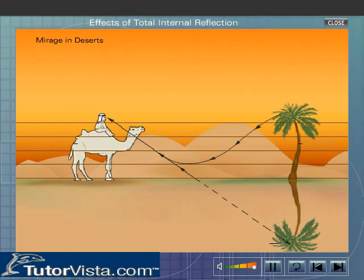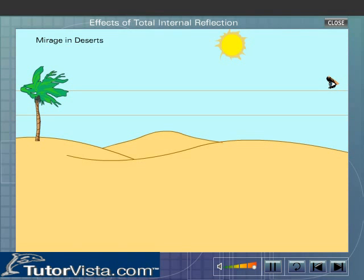The observer thinks that the inverted image of the far-off object is the reflection of the object in water, although no water exists there. Let us see how this happens.